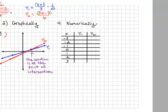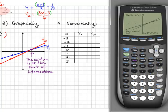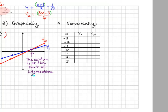To find the point of intersection, we can use a feature on our calculator called calculate. Go to 2nd, trace, and select number 5 which is intersect. Press enter to select the first curve, enter to select the second curve, then use the arrow key to move to the point of intersection and press enter. It tells us the intersection is at x equals 2. The x value of the point of intersection is the solution to our equation — x equals 2, just like we got when we solved the equation symbolically.